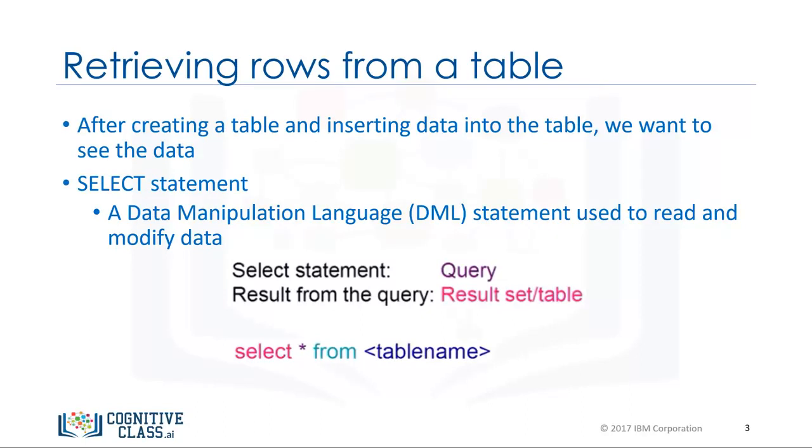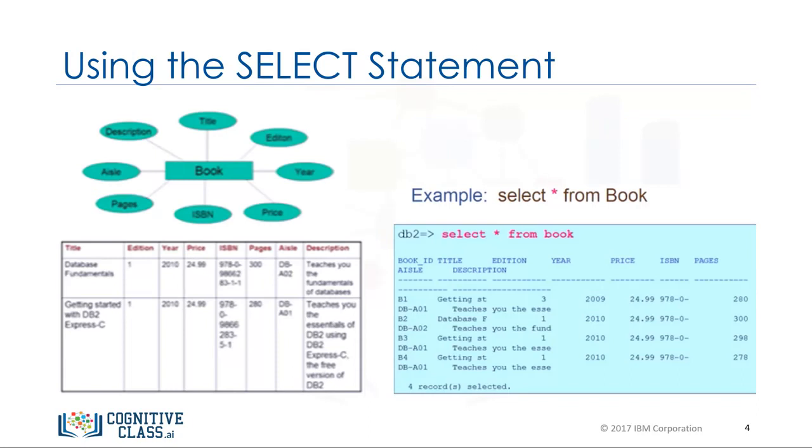In its simplest form, a SELECT statement is SELECT star from table name. Based on the book entity example, we would create the table using the entity name book, and the entity attributes as the columns of the table.